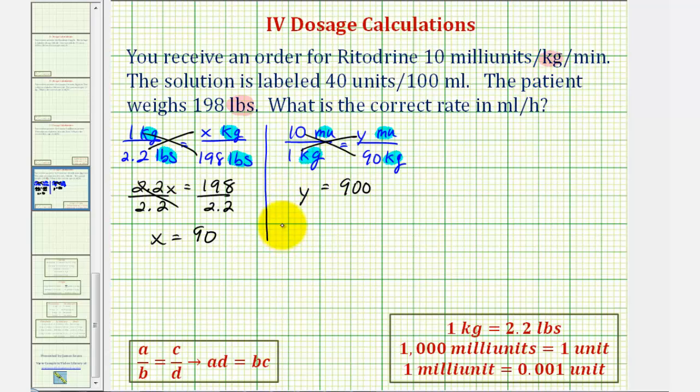So again, we can write the order for this particular patient as 900 milliunits per minute. But notice how we want the flow rate in milliliters per hour, so now let's convert this rate into milliunits per hour, and then we'll determine how many milliliters we need.